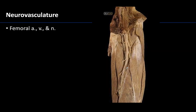One last thing to touch on is the neurovasculature of the anterior compartment of the thigh. We have already dissected the femoral triangle region, so this is a bit of a review. From medial to lateral, remember the mnemonic VAN: the femoral vein, the femoral artery, and the femoral nerve, organized in that order. The femoral artery is the main arterial supply of the entire lower limb, whereas the femoral nerve provides motor innervation to the anterior compartment of the thigh, although its cutaneous innervation has a slightly larger expanse.